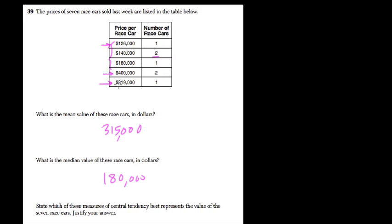But most of the data is clustered within the $100,000 to $180,000 range, and then there's $400,000 and $819,000. So the $315,000 I wouldn't actually pick because that over-represents five of the cars and under-represents two of the cars.